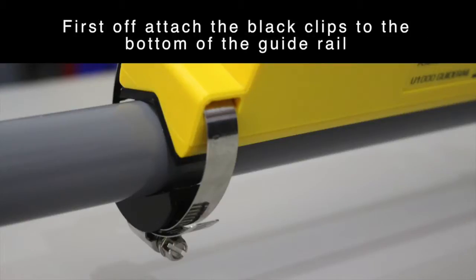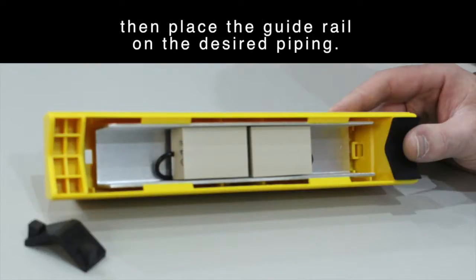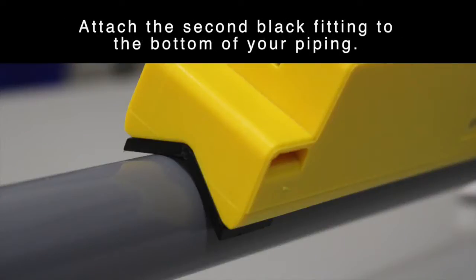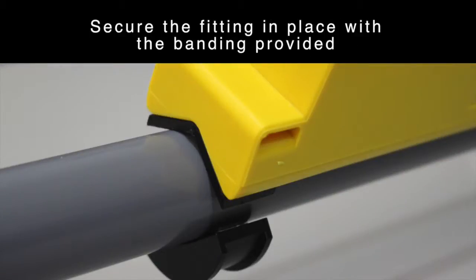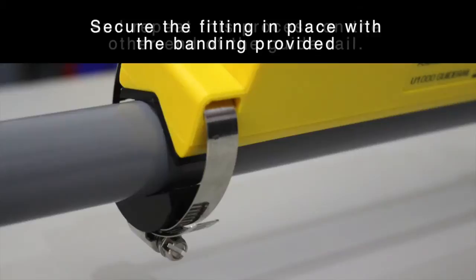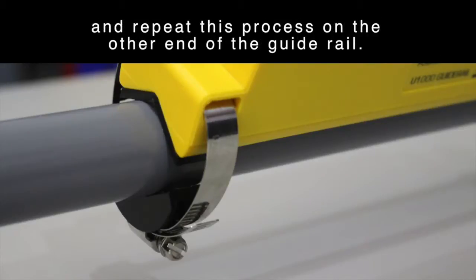First, attach the black clips to the bottom of the guide rail. Then place the guide rail on the desired piping. Attach the second black fitting to the bottom of your piping. Secure the fitting in place with the banding provided and repeat this process on the other end of the guide rail.